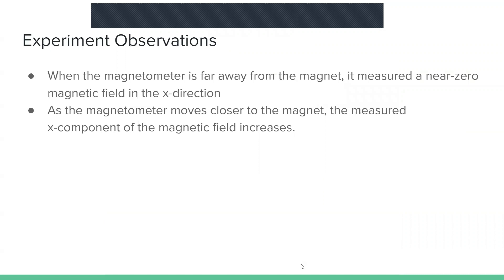Before we get into coding, some things are observed in the experiment as follows. When the magnetometer is far away from the magnet, it measured a near-zero magnetic field in the x-direction. As the magnetometer moved closer to the magnet, the measured x-component of the magnetic field increases.